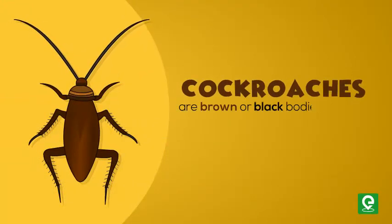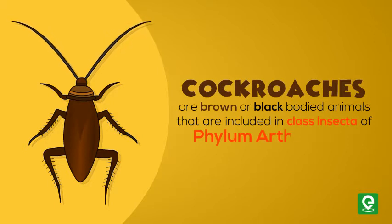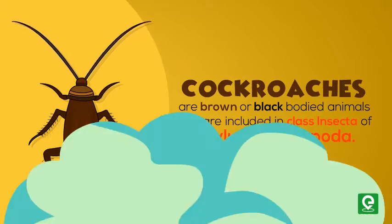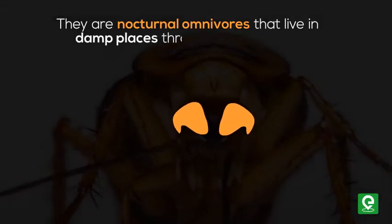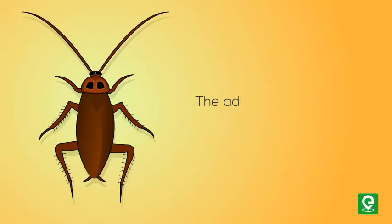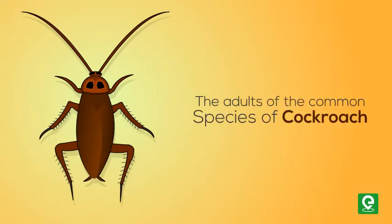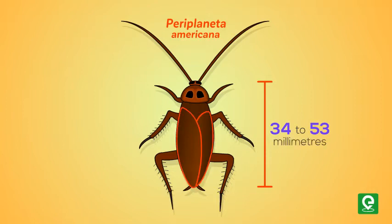Cockroaches are brown or black-bodied animals that are included in class Insecta of phylum Arthropoda. They are nocturnal omnivores that live in damp places throughout the world. The adults of the common species of cockroach, Periplaneta americana, are about 34 to 53 millimeters long, with wings that extend beyond the tip of the abdomen in males.